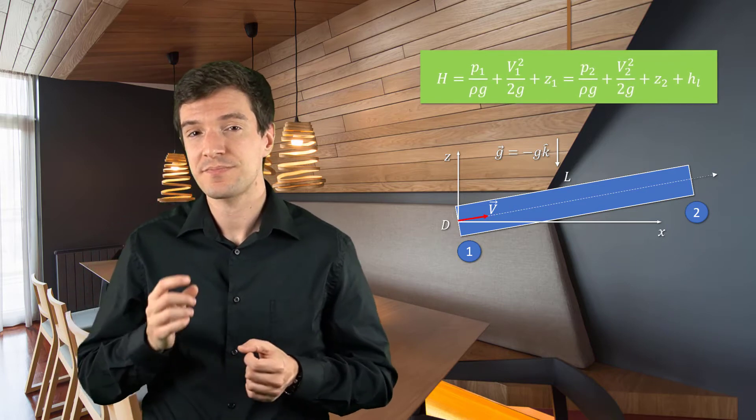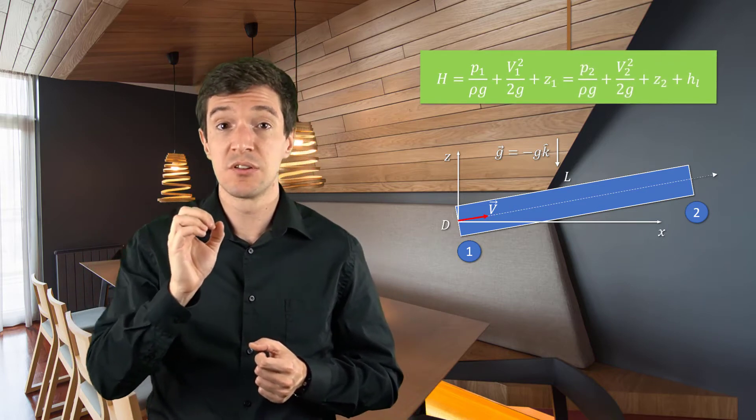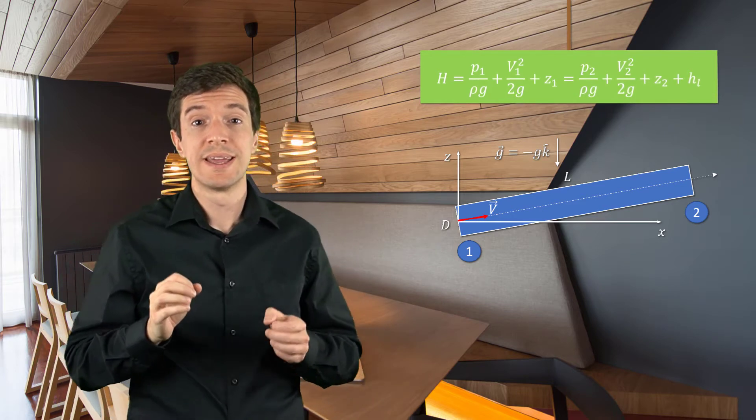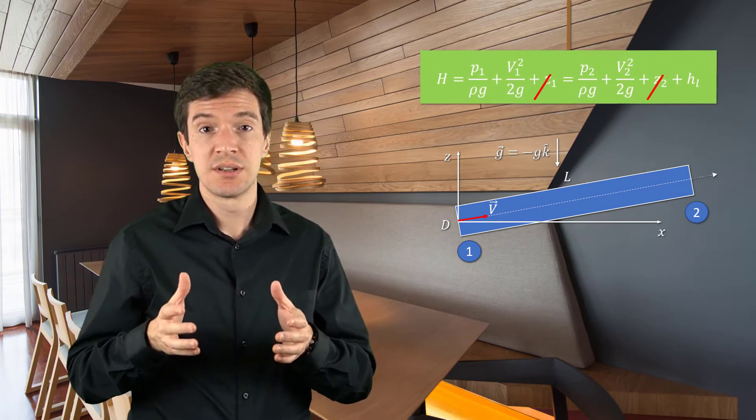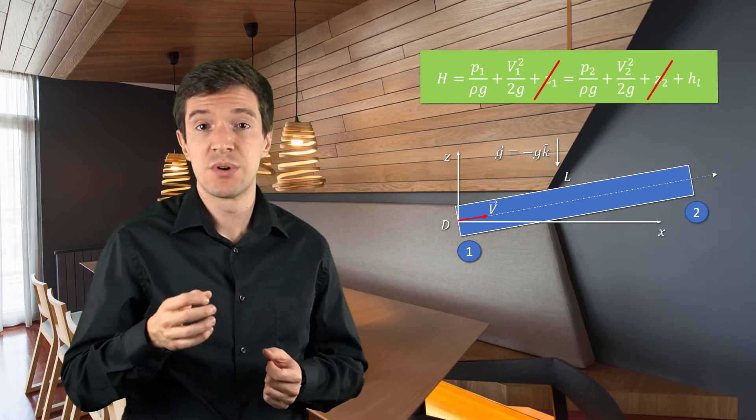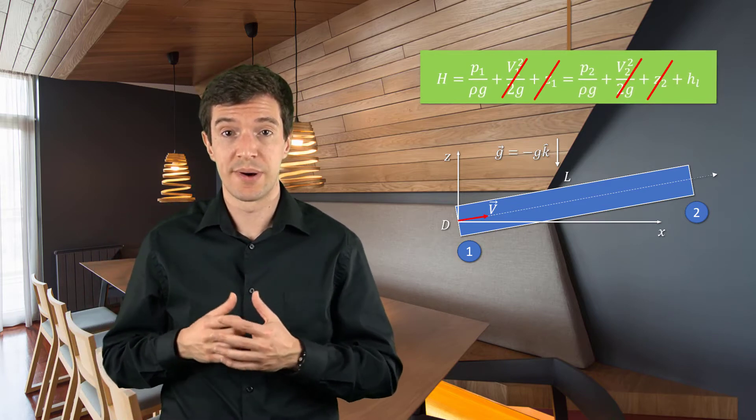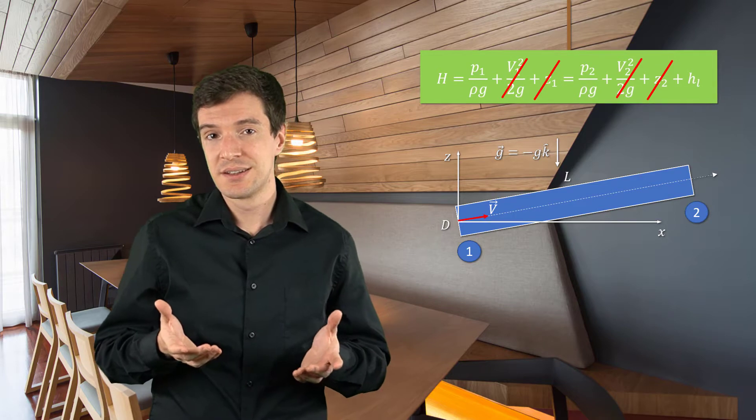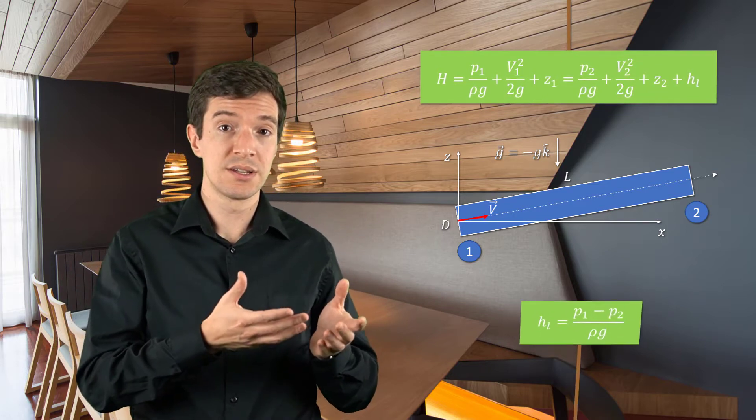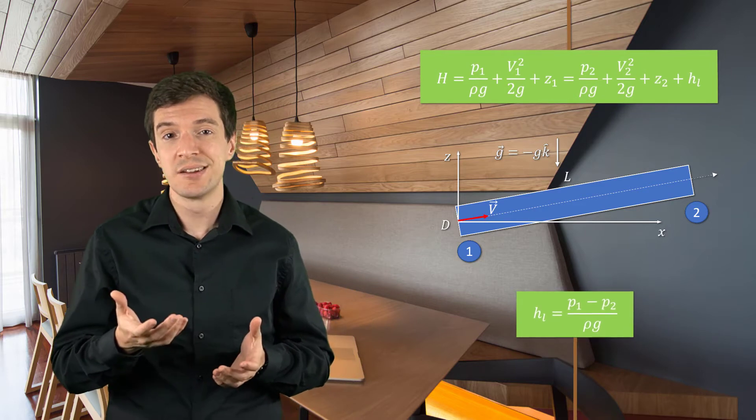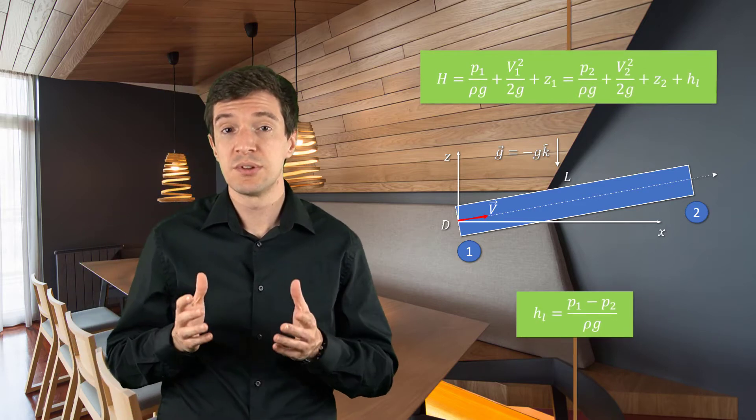Now, for any incompressible, fully developed flow in a level pipe, the Z terms are the same, as well as the velocity through the pipe. This lets us obtain an expression for the HL loss in terms of a scaled pressure difference between the two locations.